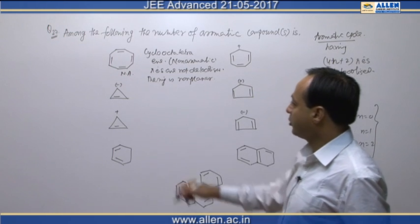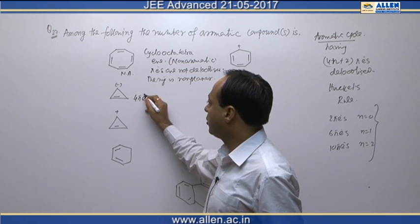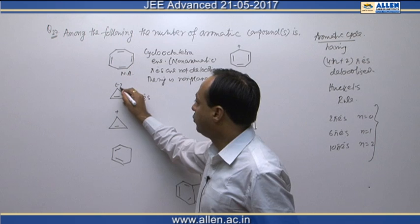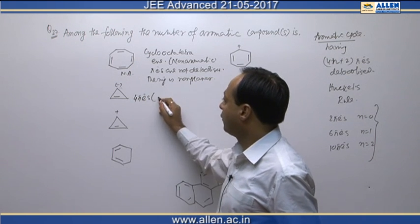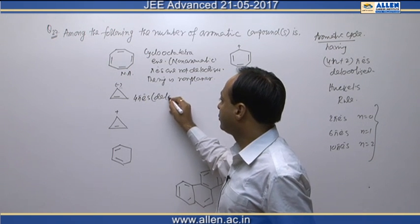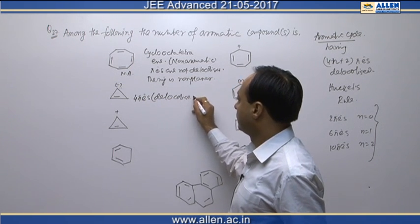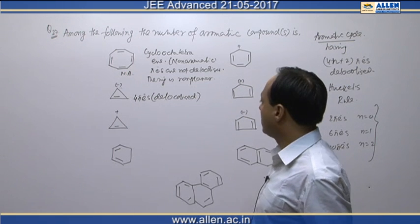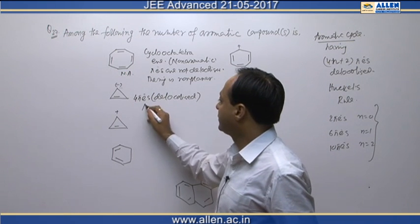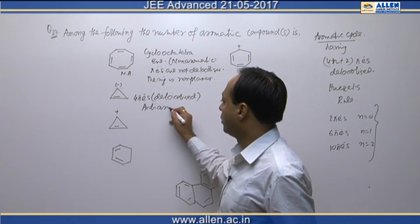The second compound has 4 pi electrons delocalized, due to a lone pair contributing. With 4 pi electrons delocalized, it is called an anti-aromatic compound.